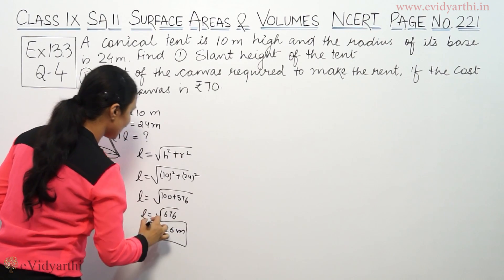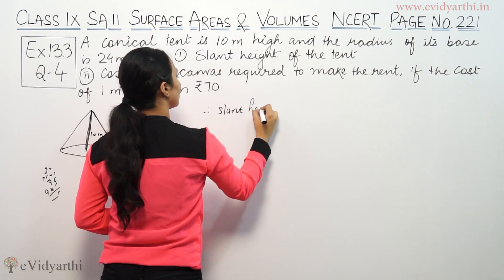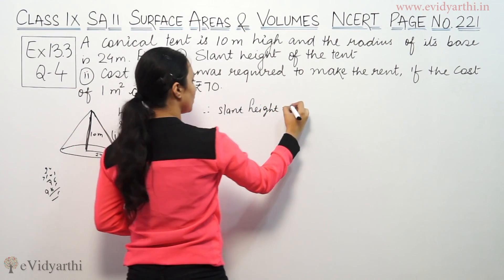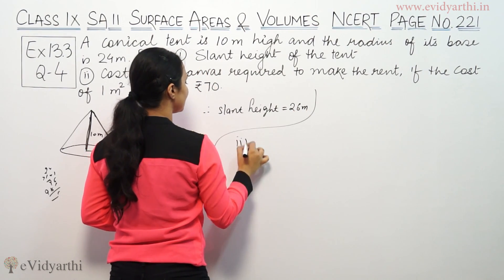So 26 meters is the slant height. Therefore, slant height equals 26 meters. Now, second part.